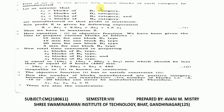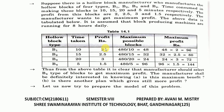Let us now try to prepare the model of this problem. It is not given how many blocks of each category are to be manufactured. So let us assume that x1, x2, x3, and x4 are the number of blocks of B1, B2, B3, and B4 category manufactured so that profit is maximum. The profit Z is given by: Z equals 2x1 plus 2.5x2 plus 3x3 plus 1.5x4.